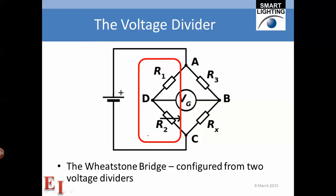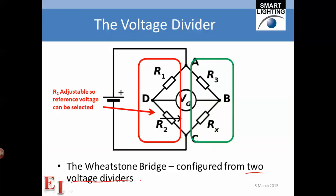But again, we just have two voltage dividers. That's really all it is, two voltage dividers. On the left, again, we said that we make R2 adjustable so the reference voltage can be selected.